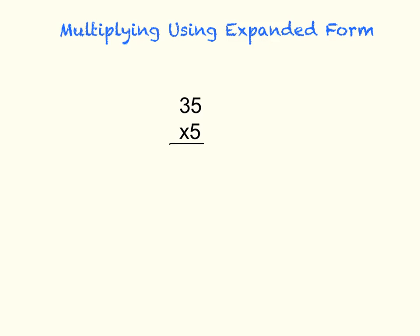I know that 35 is 30 plus 5. Let's multiply the ones first. 5 times 5 is 25.